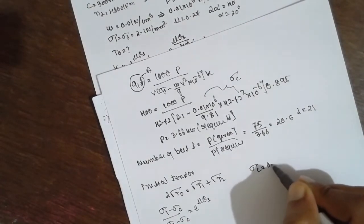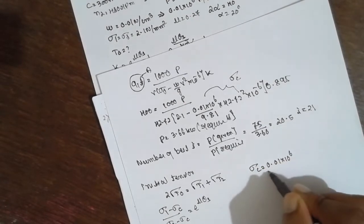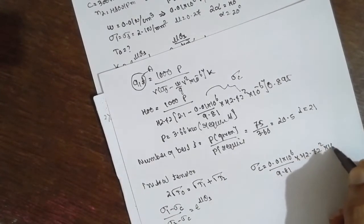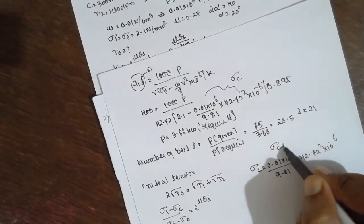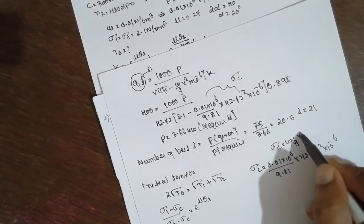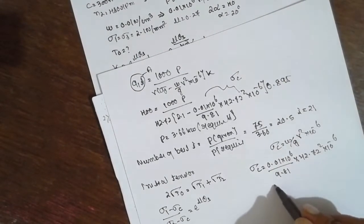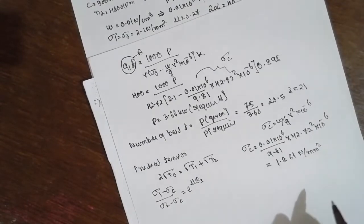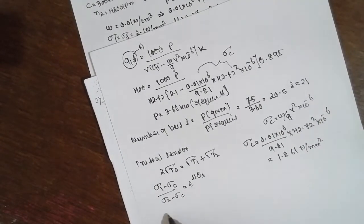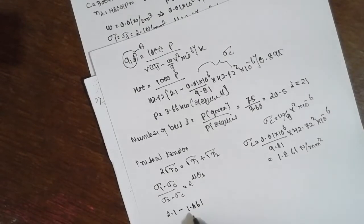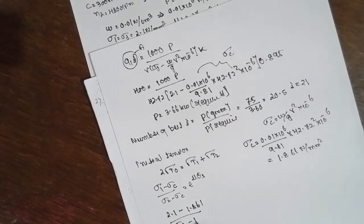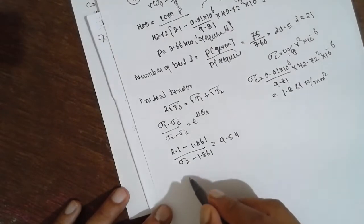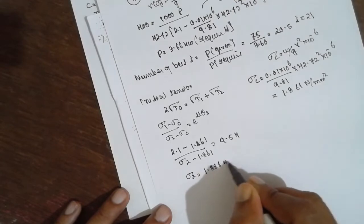The value for sigma_C is equal to 0.01*10^6/9.81*42.72²*10^(-6). The formula will be sigma_C = w/g*v²*10^(-6). The operating value will be 1.861 N/mm². Now, sigma_1 is already known: 2.1 minus 1.861 divided by sigma_2 minus 1.861 is equal to 9.54. Therefore, the sigma_2 will be 1.886 N/mm².